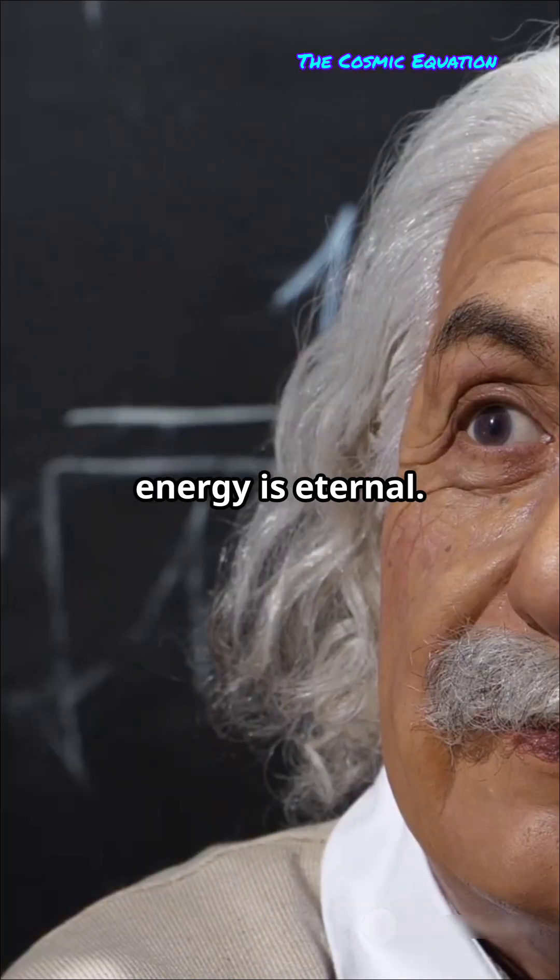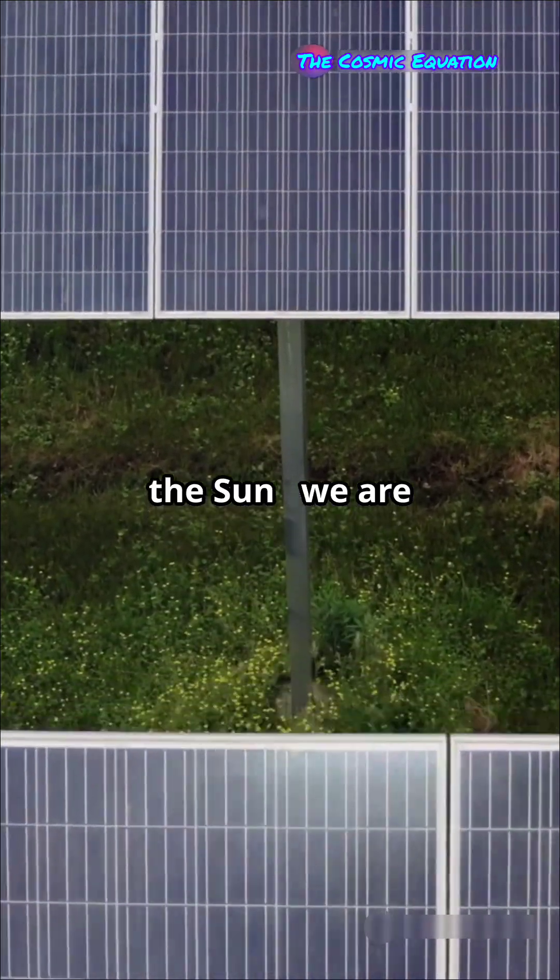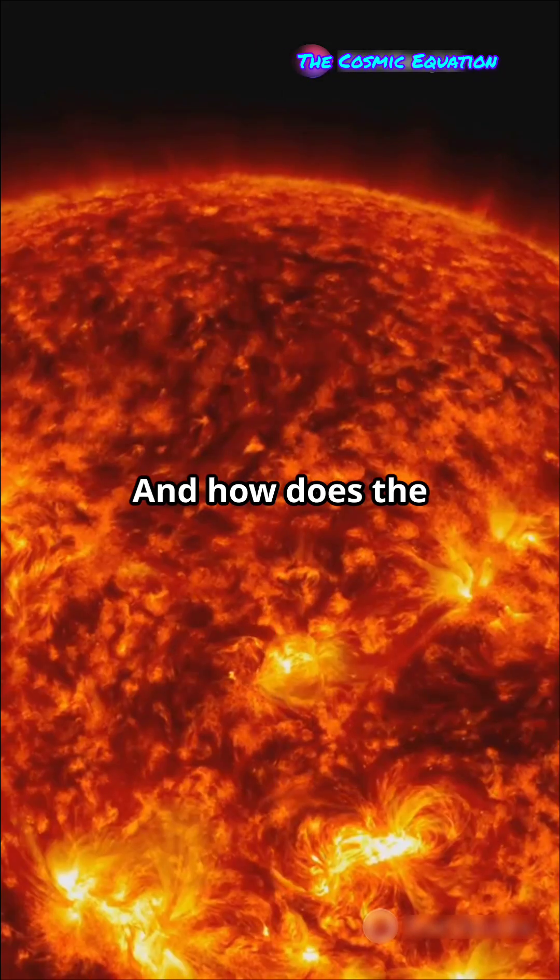Albert Einstein himself proved energy is eternal. It cannot be destroyed. The energy that comes to Earth from the sun, we are simply converting it. And how does the sun create it?